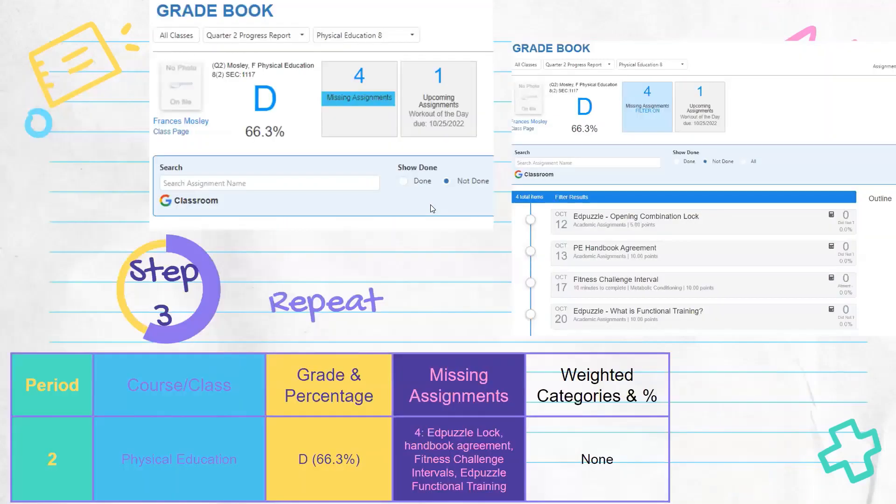Then you're going to repeat that step for each course. So now we're in this student's period two, which is physical education. This student has a D, which is a 66.3%. So that's on there. Now, if your student has your Google Classroom linked, the screen is going to look a little bit different.